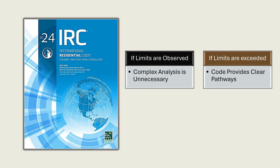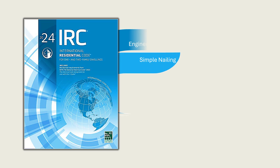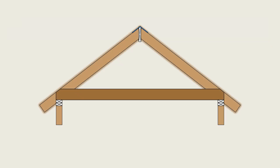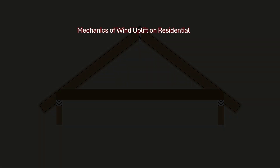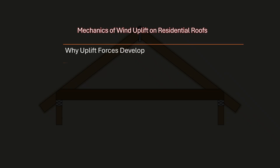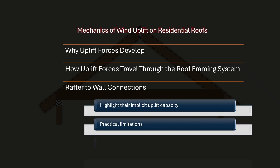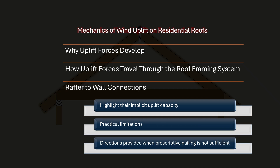Understanding where those limits lie and how the code transitions from simple nailing to engineered connectors is essential for anyone designing, detailing, or reviewing residential roof framing. Misunderstanding this transition often leads to either unconservative detailing or unnecessary over-design, both of which can be avoided with a clear reading of the code. This video will examine the mechanics of wind uplift on residential roofs, the prescriptive rafter-to-wall connections, their implicit uplift capacity, practical limitations, and directions provided when prescriptive nailing is not sufficient.